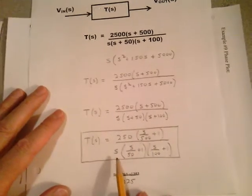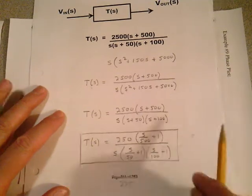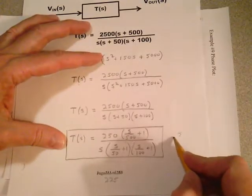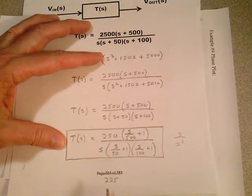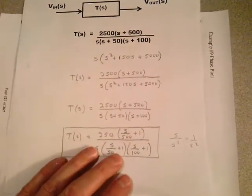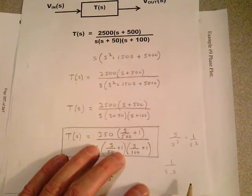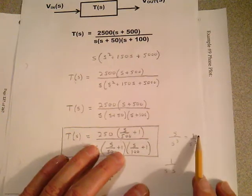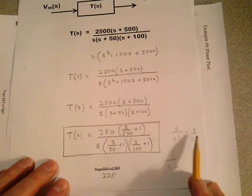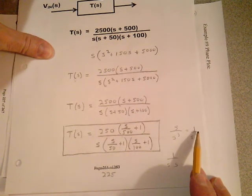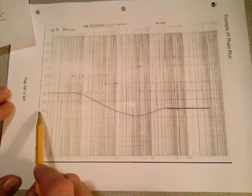Let's verify we end up at minus 180 degrees. Going back to the original transfer function and letting S dominate, I get S over S-cubed in the numerator over denominator, which simplifies to 1 over S squared. Each S in the denominator represents 90 degrees of phase shift — since j omega carries the angle — giving 180 degrees total. Bringing it to the numerator gives minus 180 degrees at omega equals infinity. Looking at the curve as omega goes to infinity, I'm at minus 180 degrees. It checks.